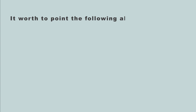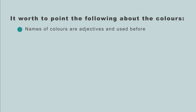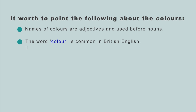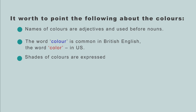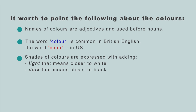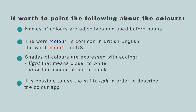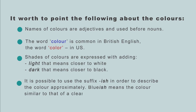It's worth noting the following about colours. Names of colours are adjectives and used before nouns. The word 'colour' is common in British English; 'color' in US English. Shades of colours are expressed by adding 'light' — meaning closer to white — or 'dark' — meaning closer to black. It is possible to use the suffix '-ish' to describe a colour approximately. For example, 'bluish' means a colour similar to that of a clear, unclouded sky.